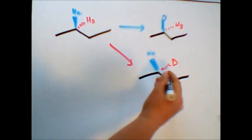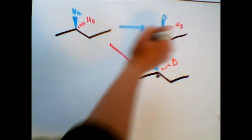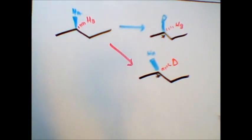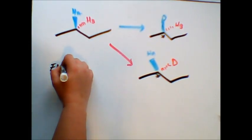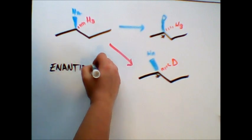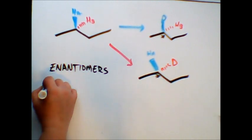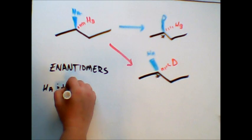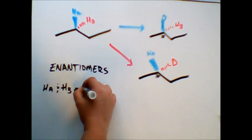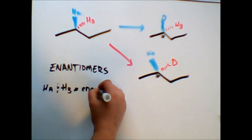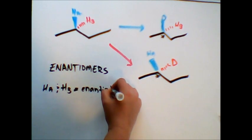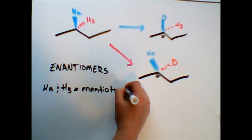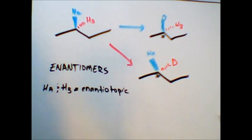Notice that we've introduced stereochemistry at this carbon and at this carbon, and that the two centers are mirror images of each other. This means that the two molecules are enantiomers, which in turn means that HA and HB are enantiotopic. They will react identically with achiral reagents and differently with chiral reagents that are also identical spectroscopically.